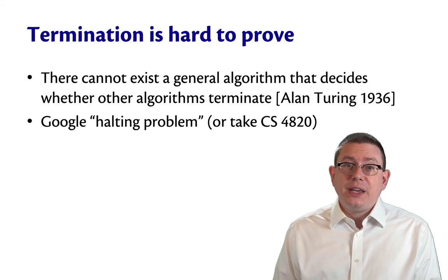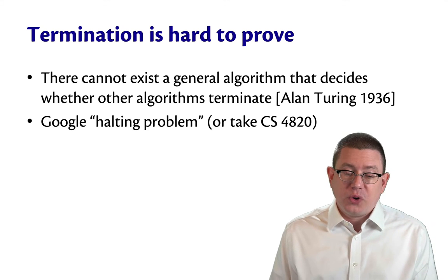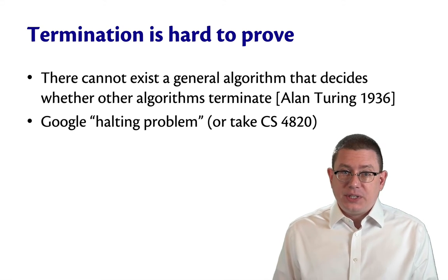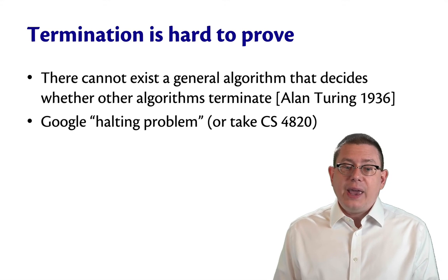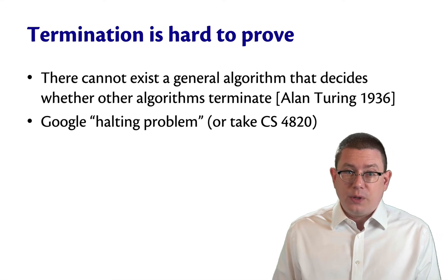Termination is hard to prove. That's why actually all along here we've really only been doing partial correctness. Alan Turing, in fact, showed this in 1936. There cannot exist a general algorithm that decides whether other algorithms terminate.